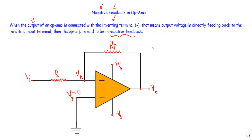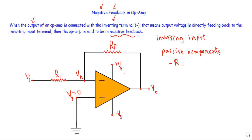The connection must be made using any passive component, like a resistor, inductor, capacitor, diode, or short circuit. You will see that in an operational amplifier buffer circuit, the output terminal is directly connected with the inverting terminal through a short circuit, so that will also be a negative feedback.